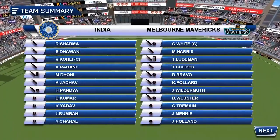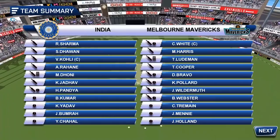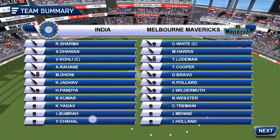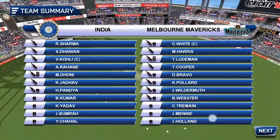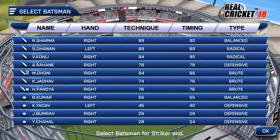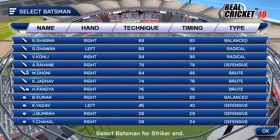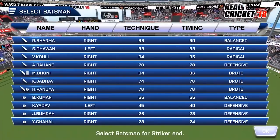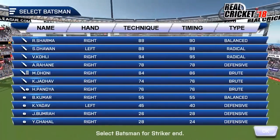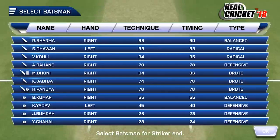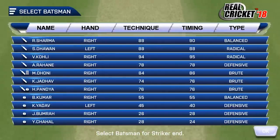As you can see, this is the playing 11 for both the teams. When we get to this screen we are asked to choose the striker and the non-striker. We have four types of batsmen: defensive, balanced, radical, and brute, and based on their type they all have different styles of batting and strengths.